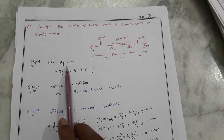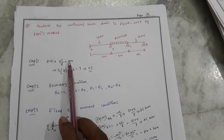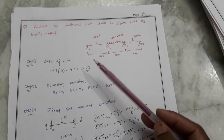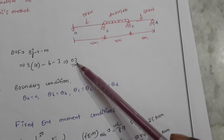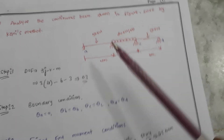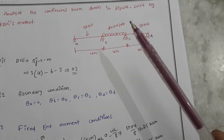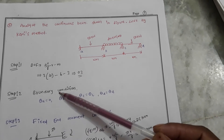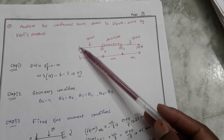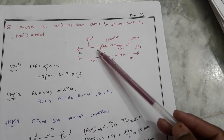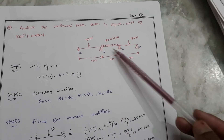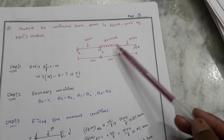The first step is degree of freedom. We need to find how many unknown displacements are there in the structure. From the boundary conditions: theta_A equals zero due to the fixed support, theta_B equals theta_B, theta_C equals theta_C, and theta_D equals theta_D, because these are rollers — so we have rotation here.